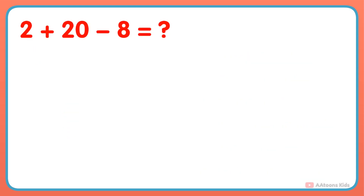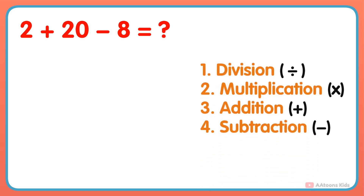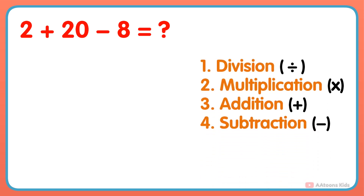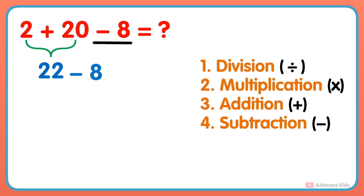What is 2 plus 20 minus 8? In this problem, two operations — addition and subtraction — are given. So according to the order, we would first perform the addition: 2 plus 20 gets 22. And next, subtract 8 from the result, and you will get your answer: 22 minus 8 equals 14.